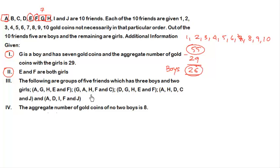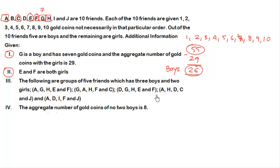Looking at the next group: G, A and H are already boys, so F and C must be girls. F is already a girl, so C is also a girl. In the third group, E and F are already girls, so D, G and H are boys — meaning D is also a boy.